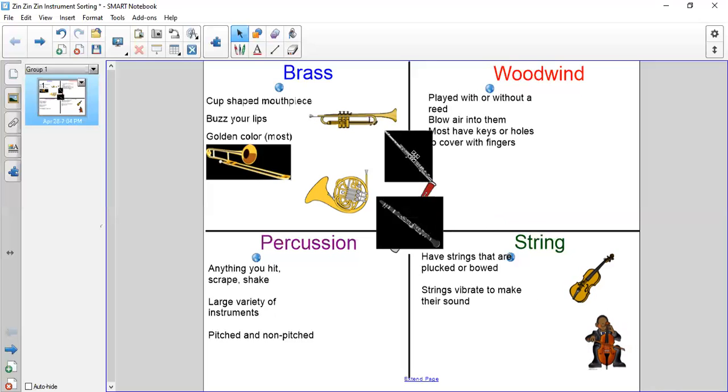This next instrument is the flute. The flute is long, it's silver, it has keys to cover with your fingers, and you blow air into it—wind. That would make it a woodwind family.